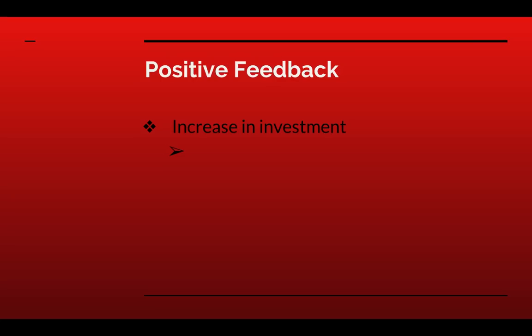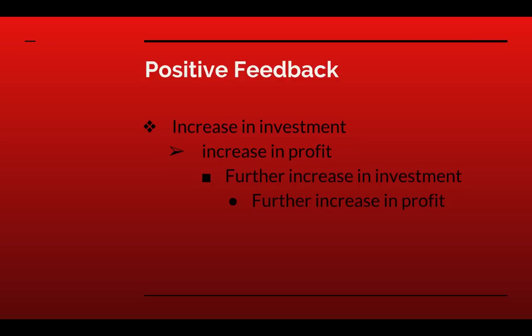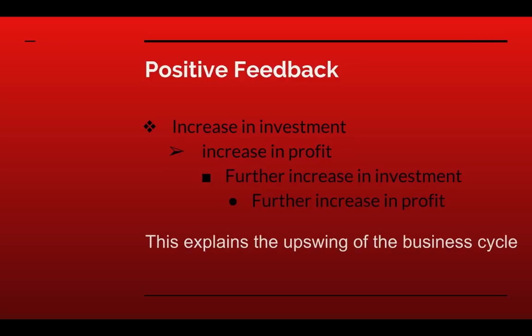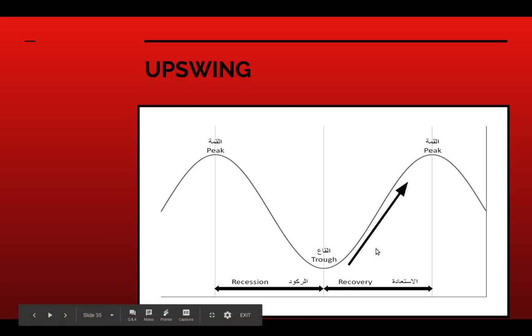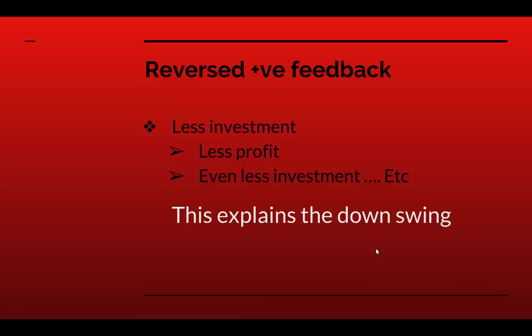So there is a positive feedback mechanism here. If there's an increase in investment, that means an increase in profit. And if capitalists are making more profit, they further increase their investment, which further increases their profit. This explains the upswing of the business cycle — it's a self-reinforcing process. But positive feedback also works in reverse: if there's less investment, they'll make less profit, and if they're making less profit, they'll choose to make less investment, and so on. This explains the downswing of the cycle.